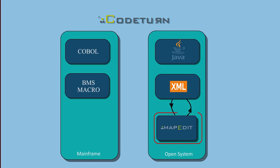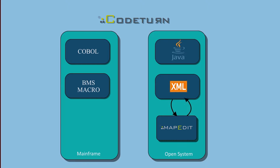Anubex offers MapEdit, a productivity tool to edit the migrated BMS Maps, which runs on Linux and Windows. MapEdit allows you to load the migrated maps and make changes to them following the WYSIWYG paradigm.